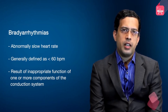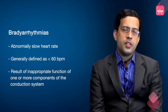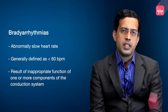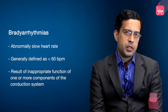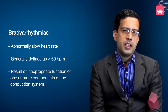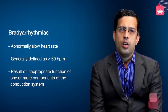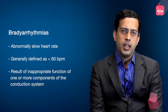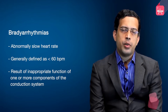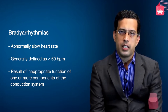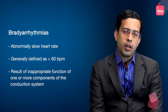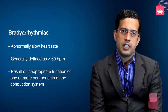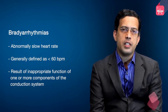A bradyarrhythmia is a condition which manifests itself by an abnormally slow heart rate. Since the lower limit of normal heart rate is 60 beats per minute, a bradycardia is defined as a heart rate less than 60 beats per minute. A bradyarrhythmia is essentially the result of inappropriate function of one or more components of the conduction system. This could be due to potentially reversible factors such as drugs or metabolic abnormalities, or more established factors such as degenerative conduction system disease, which is one of the most common reasons for bradyarrhythmias.